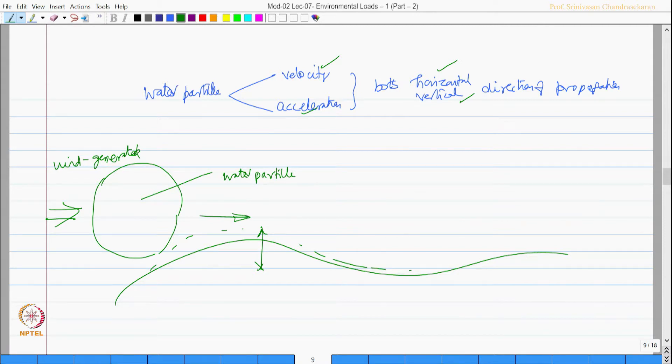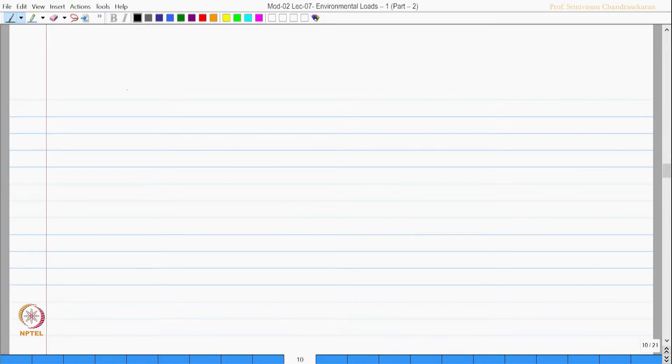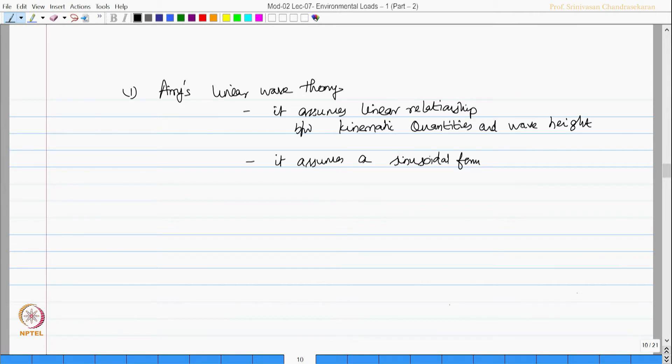They are expressed by wave elevation and amplitude. There are many theories available in the literature. The basic theory which conforms to estimation of water particle kinematics is Airy's wave theory. This is commonly used because it assumes linear relationship between kinematic quantities and wave height. Usually, it assumes a sinusoidal form.